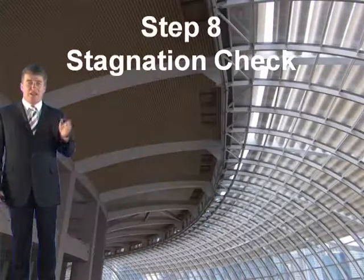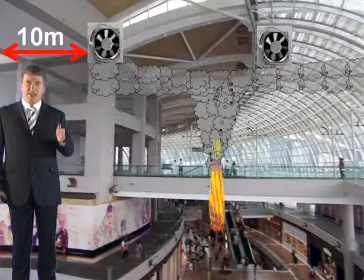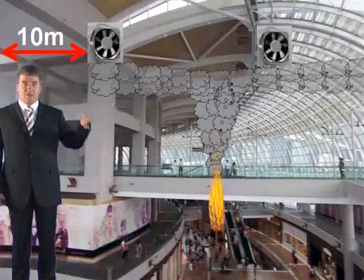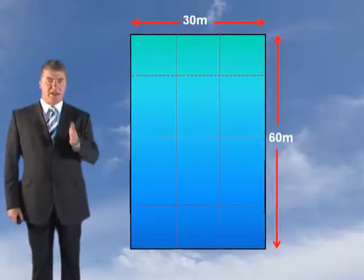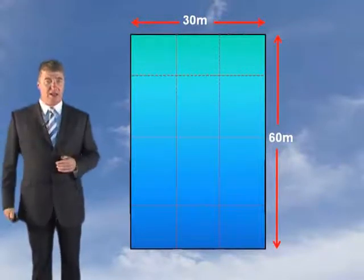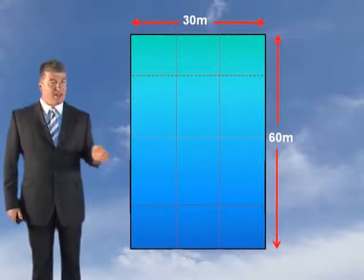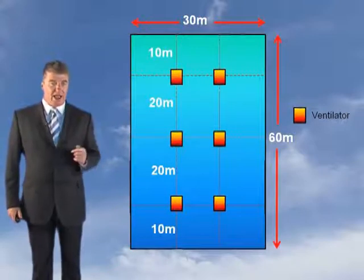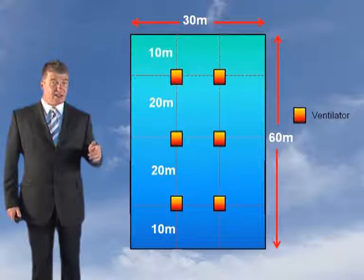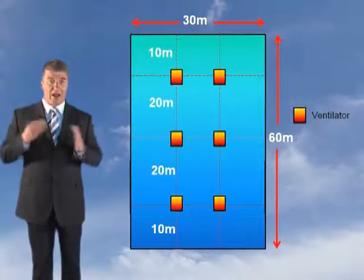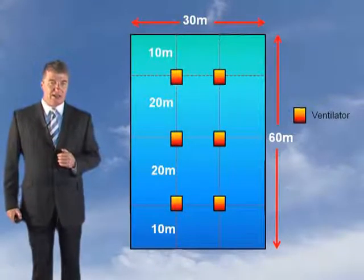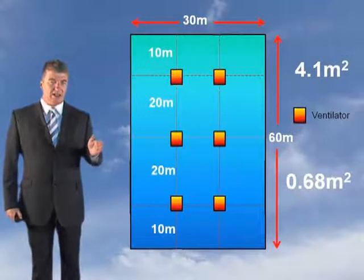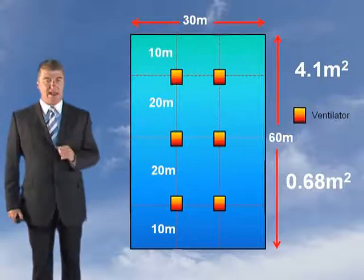Before deciding where to locate the two ventilators, you've got to carry out the stagnation check — step eight. This only applies to natural ventilation, and we are going for natural. The maximum distance from the edge of a building to a ventilator is 10 metres, and ventilators can't be more than 20 metres apart. You mark a line at 10 metres from the edge, ensuring no more than 20 metres between them, and wherever the lines intersect, you need a ventilator. As you can see, there are six intersections, so you need six ventilators. Although we only need two for size, we need six to meet the stagnation check.